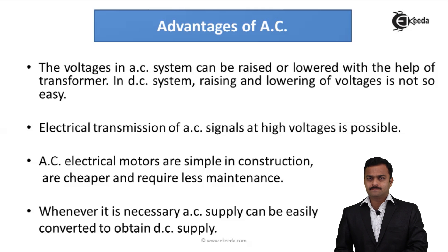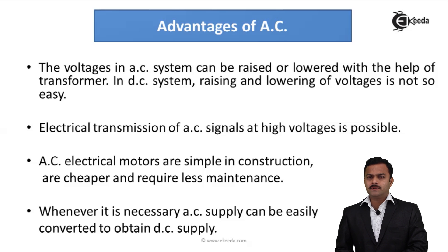Secondly, if I can raise AC voltage to a very high value, electrical transmission over long distances — transmission lines almost a thousand kilometers long — becomes feasible. I can pass very high AC voltage levels through those lines because it is very easy to increase AC voltage level, but that facility is not available with DC. So transmission at high AC voltage is possible.